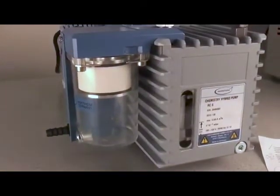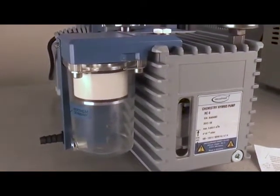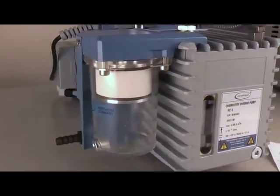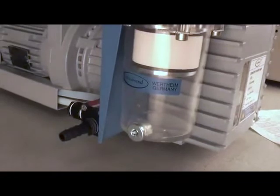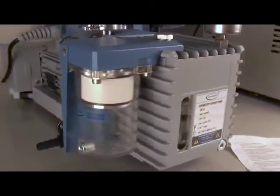Before each use, check the oil level and clarity using the viewing window on the front of the pump. Monitor the levels of the catch pot. The condensate levels must be below the bottom of the separator tube.